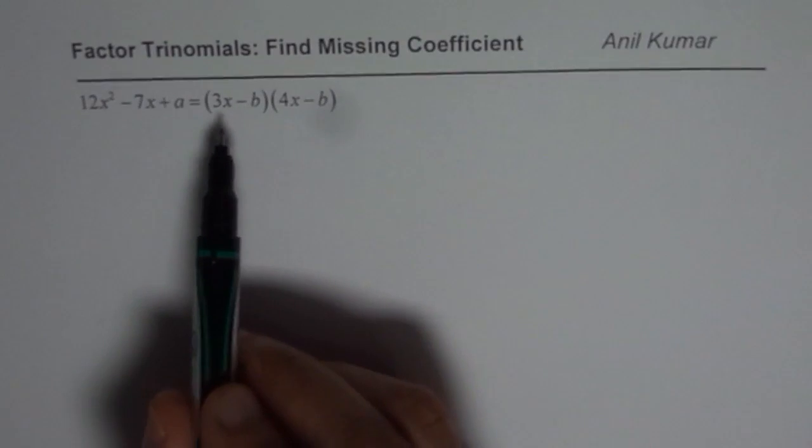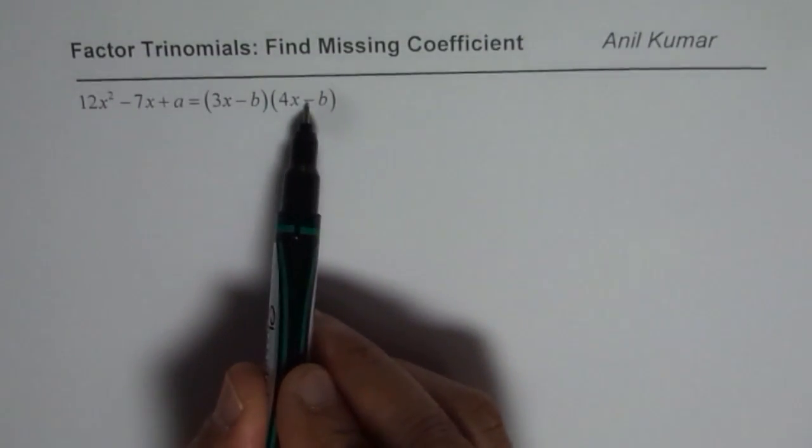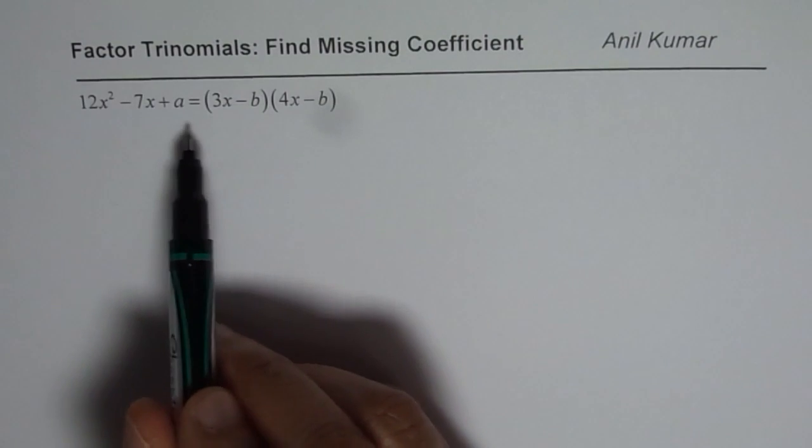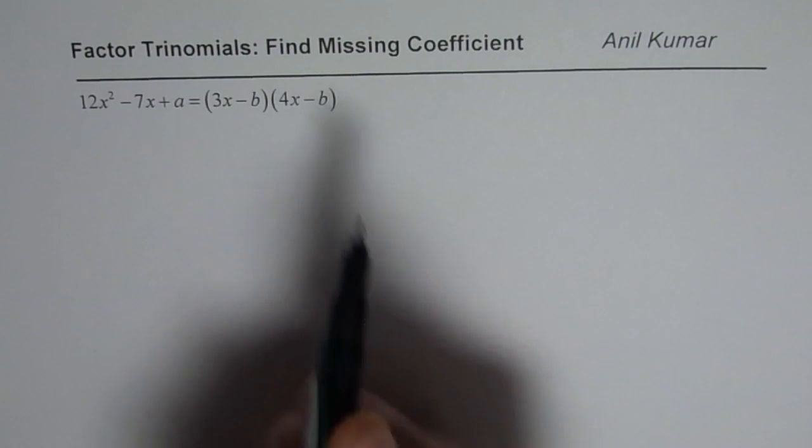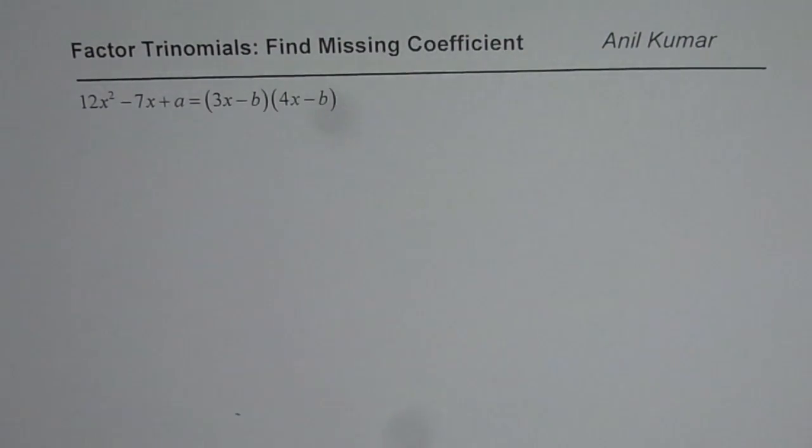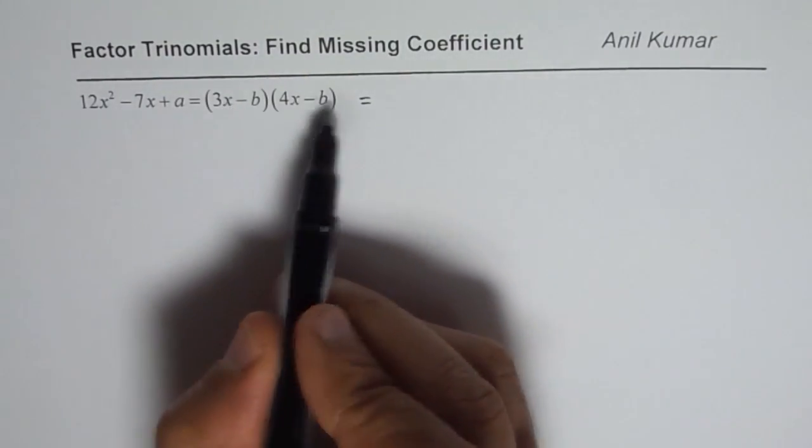One way is that you could actually expand the right side and then compare the coefficients and write down the answer. So that is one way of doing it. Of course we can do it like that also. So we will expand also and then do it, which is kind of like this.